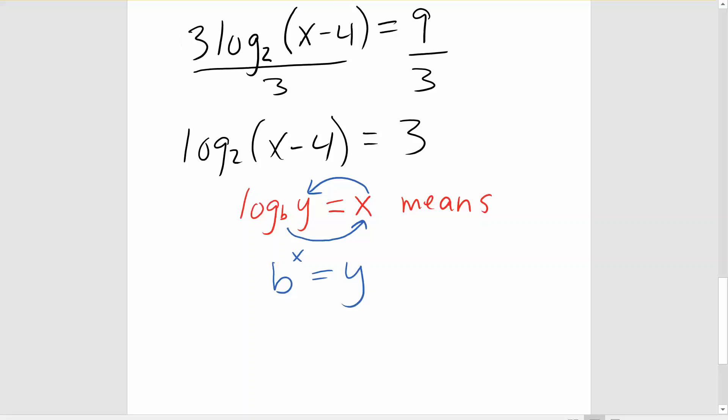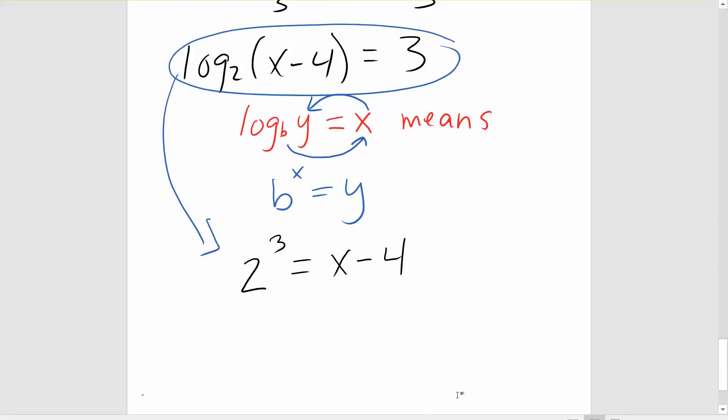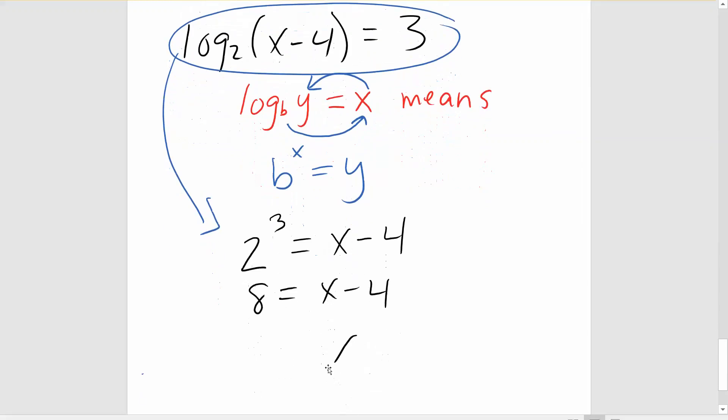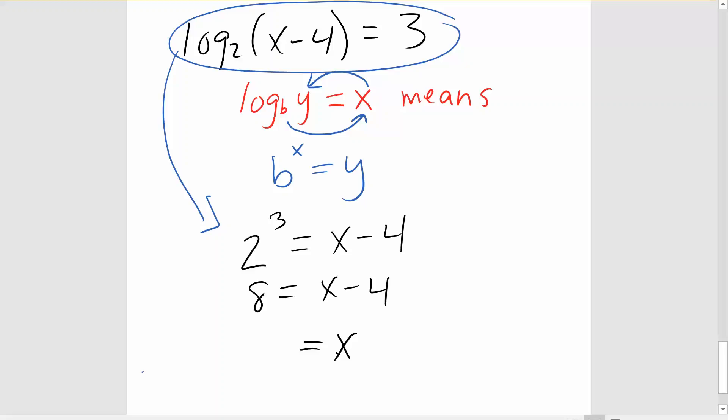So let's apply that to the equation that we have here. We now have an equation that reads 2 to the power of 3 equals x minus 4. We know that 2 to the third is 8. So adding 4 to both sides is going to give us a final answer for x of x equals 12.